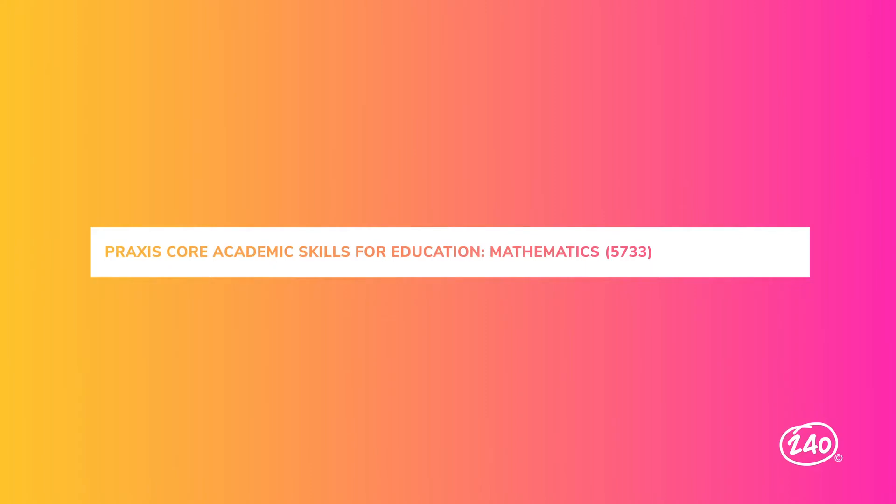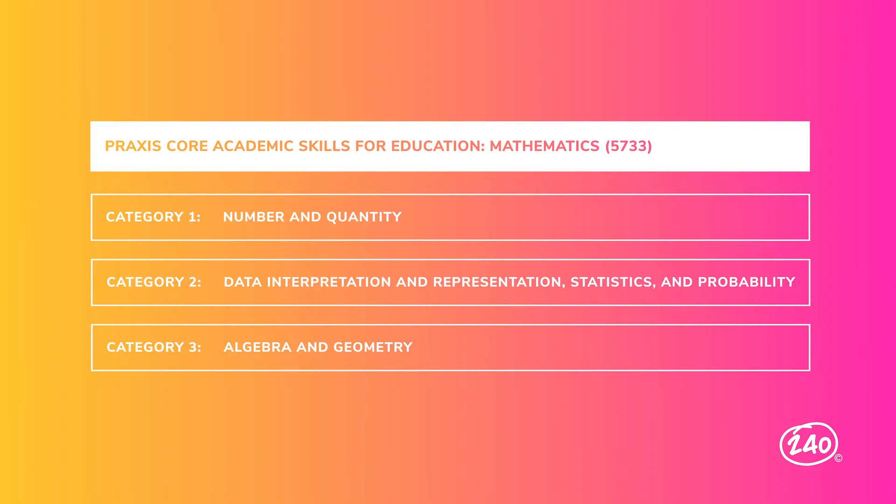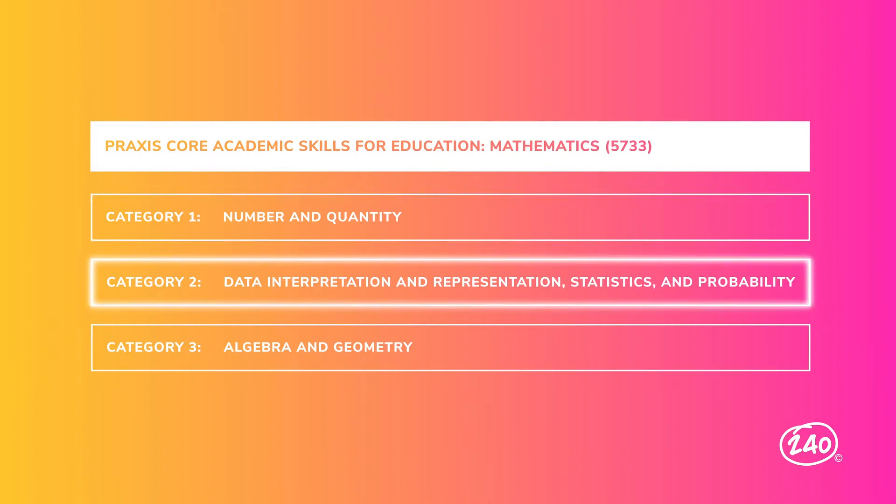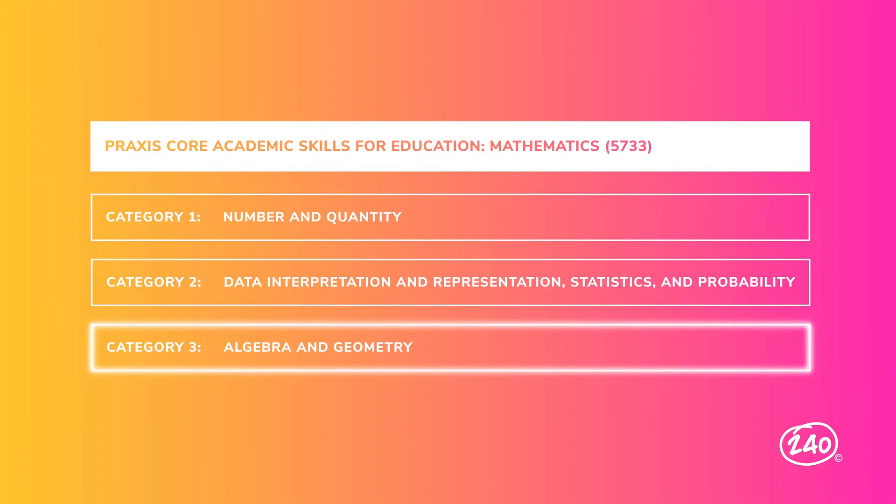The Praxis Core Math exam consists of 56 total questions that come from three overarching categories. The categories are Number and Quantity, Data Interpretation and Representation, Statistics and Probability (that's a mouthful), and Algebra and Geometry. Each category has an outline of what to expect in that category, but as you'll see here in a minute, they're still pretty overwhelming. Thankfully, we've done the research for you, and you can find exactly what you need to know in our study guide. But let's go ahead and talk about some key concepts now.